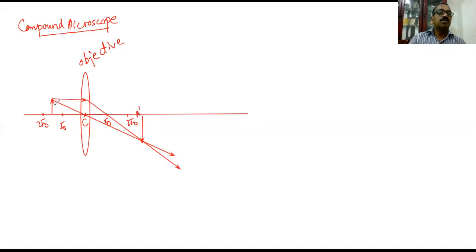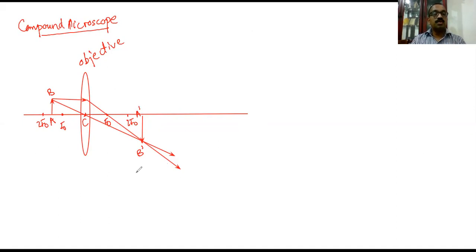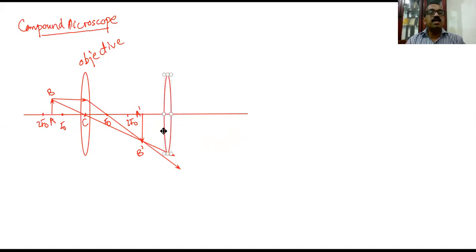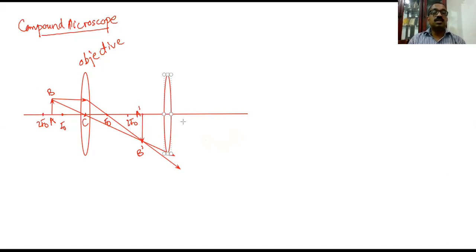So what we have seen is: if AB is the object, A'B' is the image. The object is kept between F and 2F of the objective lens so that a real, enlarged, inverted image is formed beyond 2F of the objective lens. Now you are going to position the eyepiece. When you draw the eyepiece, you should be more careful — it should have a longer focal length than the objective.